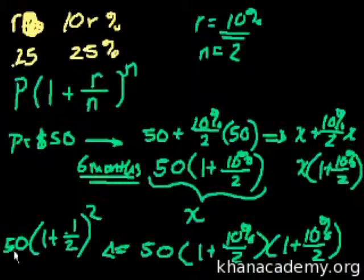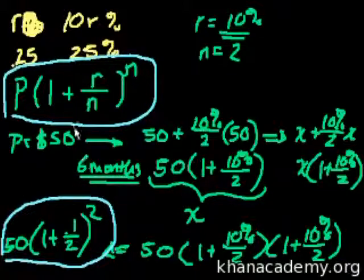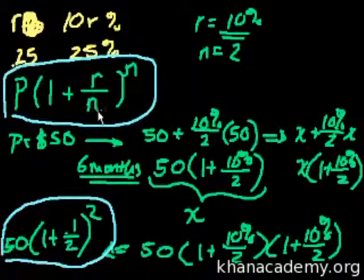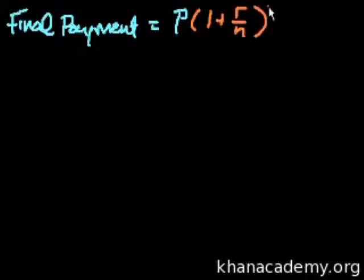The compound formula is: the principal amount times (1 plus r/n) raised to the power n, where n is the number of compounding periods. After one year, after however many periods, this formula tells us the final payment.